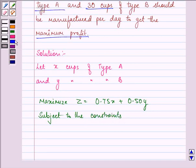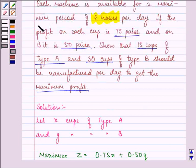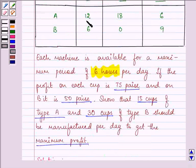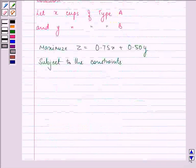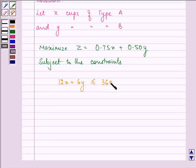We are given that each machine is available for a maximum period of six hours. So that means 12X plus 6Y is less than or equal to 6 hours, that is equal to 360 minutes. This further implies that 2X plus Y should be less than or equal to 60.